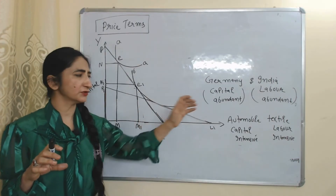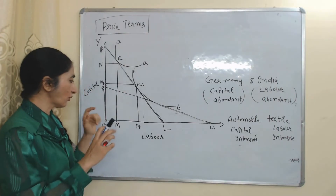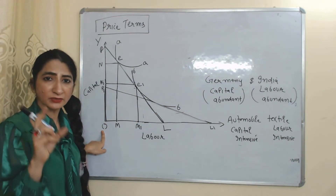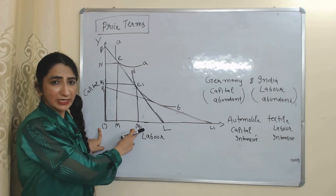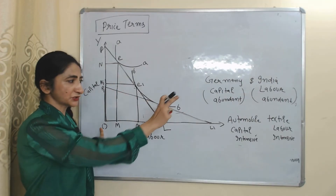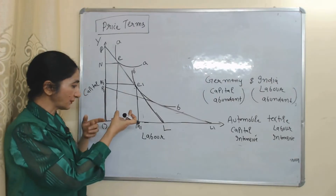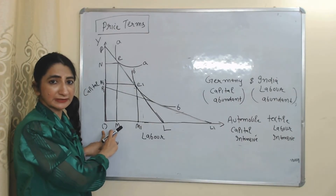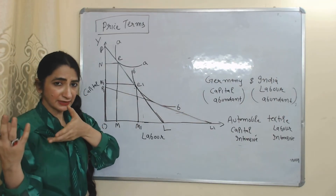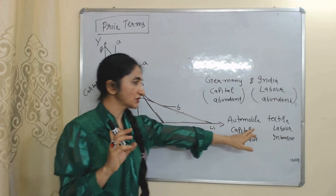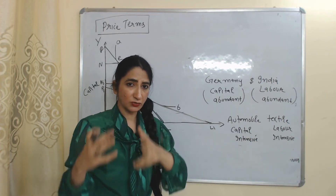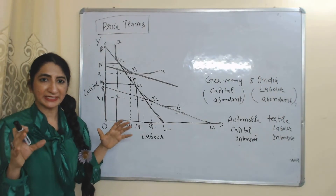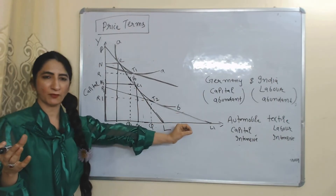Now we will see how much labor Germany needs for each product. If Germany wants to produce one unit of automobile, it needs labor OM. If Germany wants to produce one unit of textile, it needs labor OM1. The requirement of labor is more in the production of textile than in automobile production — OM1 is greater than OM. Since Germany is capital-abundant but has a scarcity of labor, Germany should not increase production of textiles; instead, Germany should reduce textile production and import textiles.